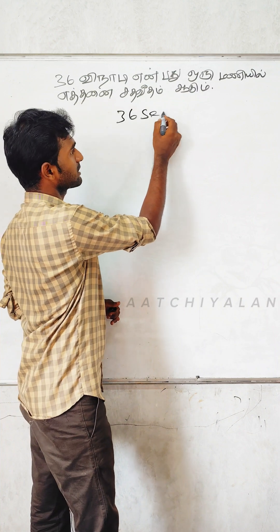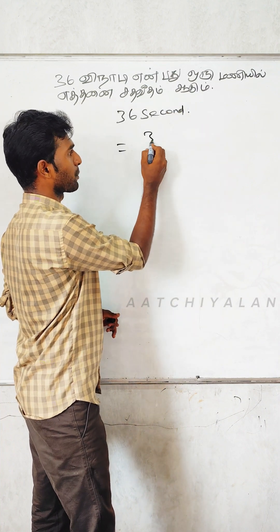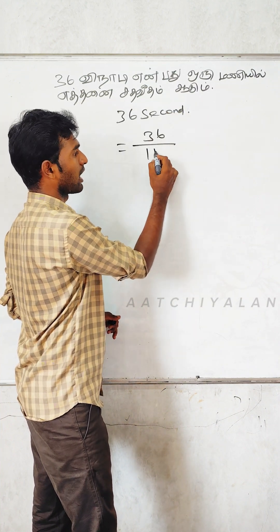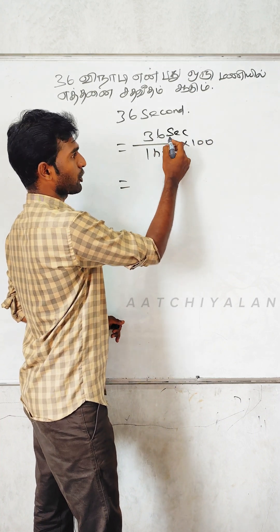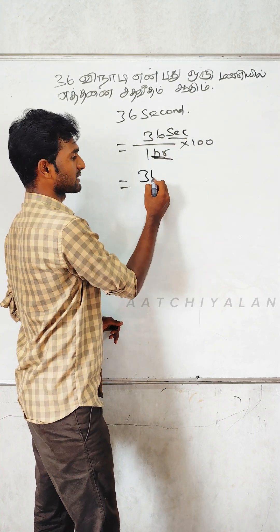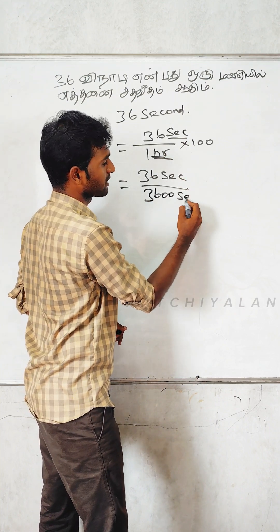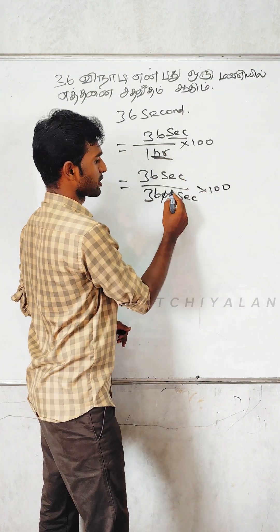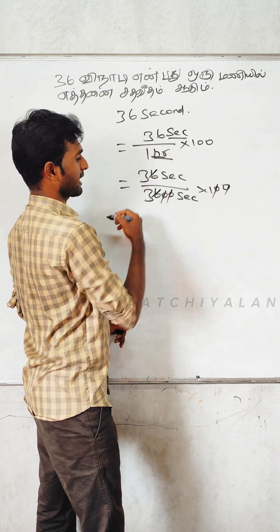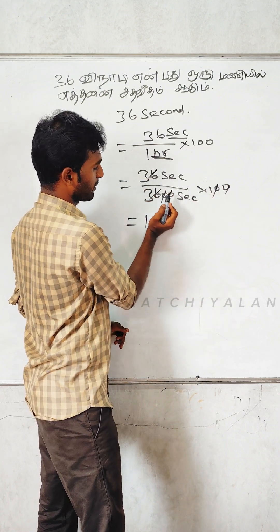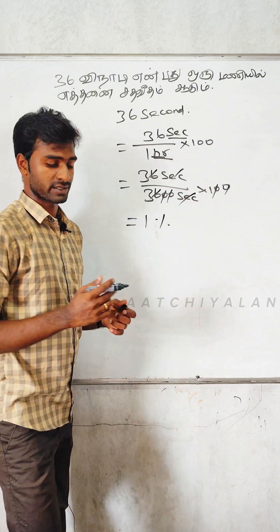36 seconds. 1R is into 100. This trend is 1. 36 seconds. 1R is 3600 seconds. Into 100. 0-0 cancel, cancel. 36 seconds cancel. 1 percentage. That's it. 36 seconds, 1R is 1 percentage.